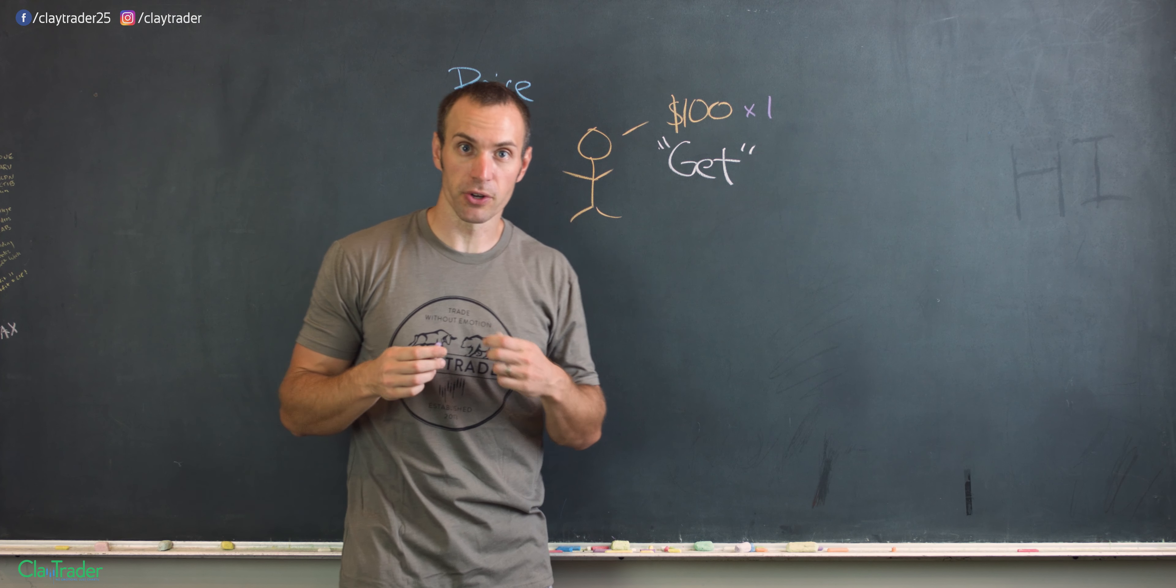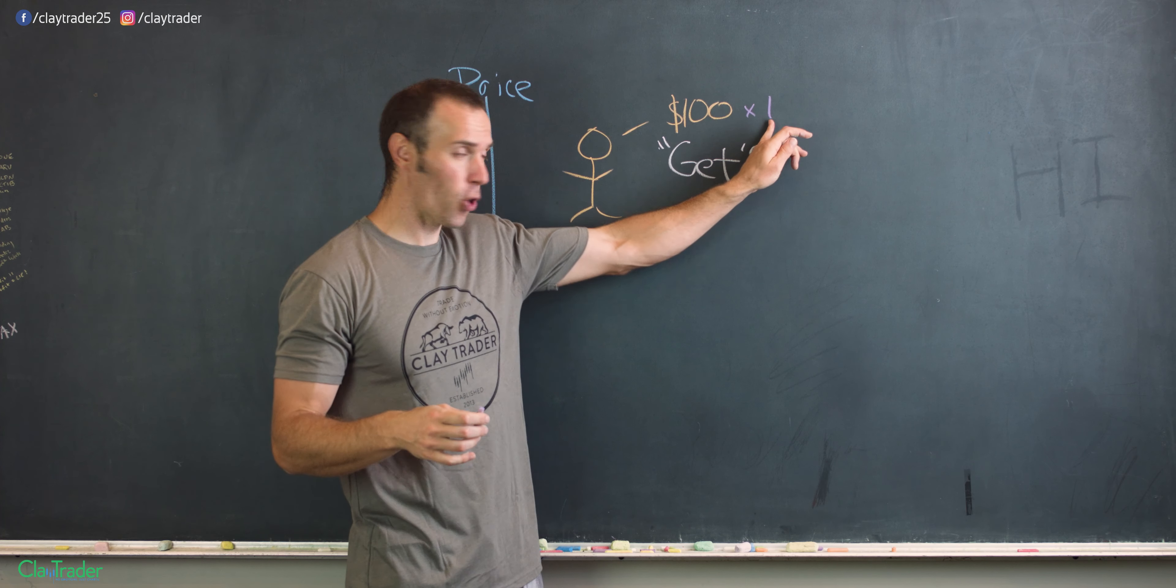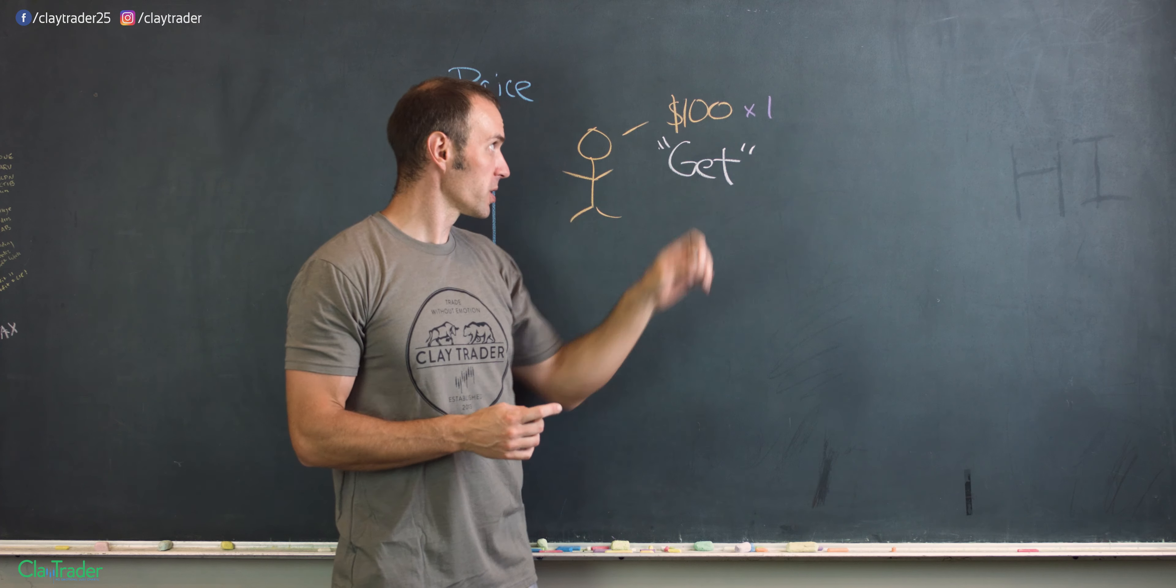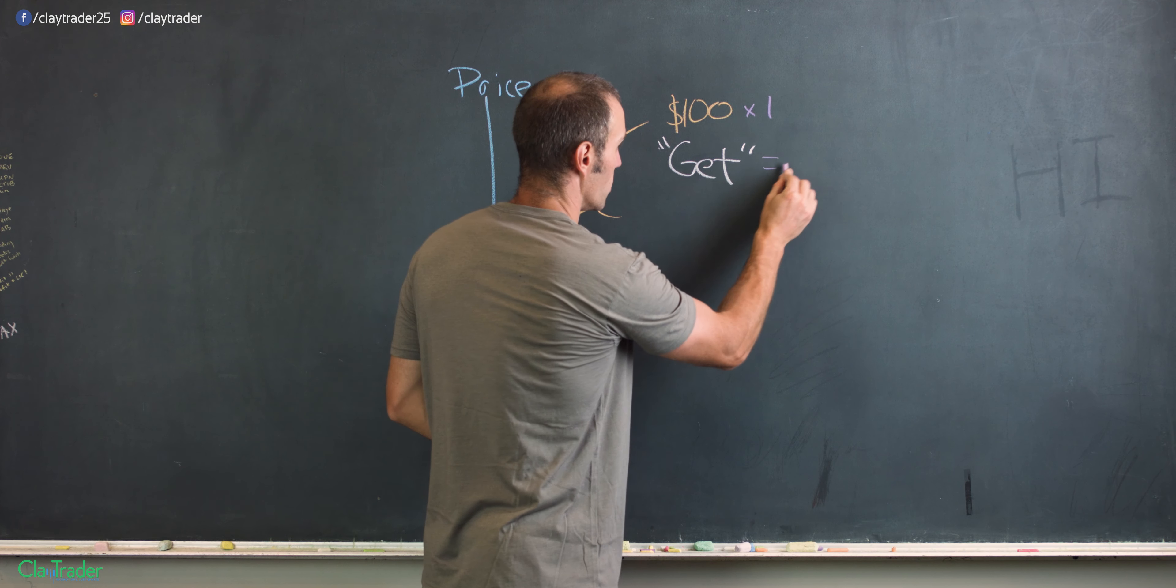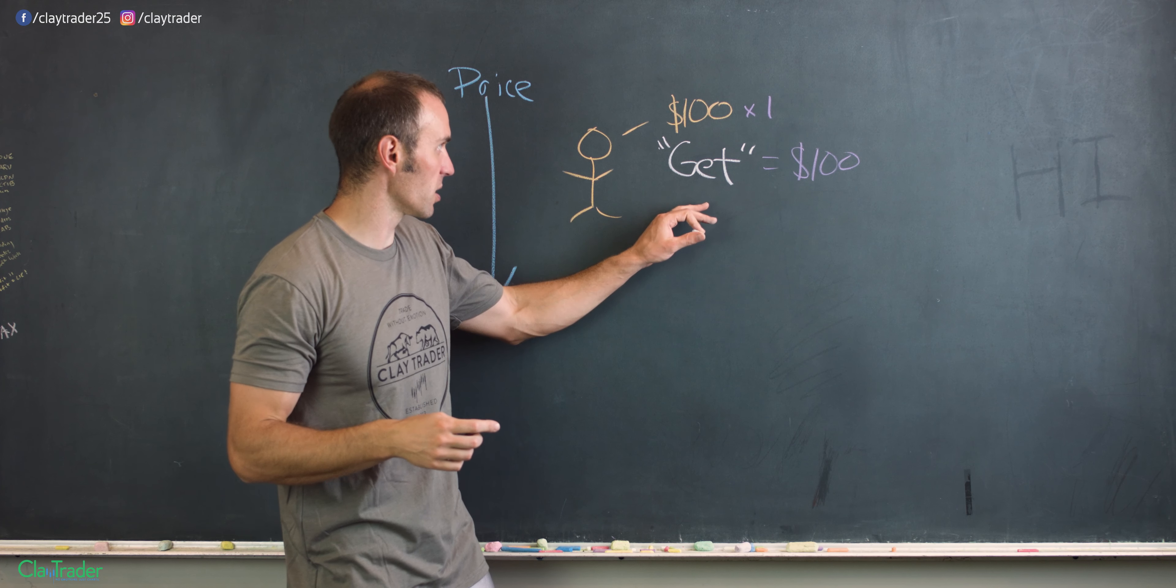But because John is doing one share at $100, how much does John get? Well hopefully you're saying, Clay, I'm not a mathematical wizard, but if he's shorting, if he's selling one share for $100, he is going to get $100. Good job, you're a mathematical genius.